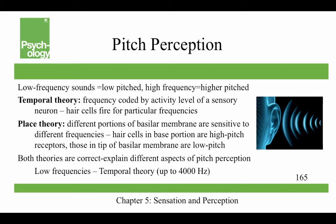For pitch perception, low-frequency sounds are low-pitched and high-frequency sounds are higher-pitched. The temporal theory states that frequency is coded by the activity level of a sensory neuron — hair cells fire only for particular frequencies — but it can't explain the whole range of hearing. Place theory holds that different portions of the basilar membrane are sensitive to different frequencies: hair cells in the base portion are high-pitched receptors and those in the tip are low-pitched. Both theories are correct but explain different aspects: low frequencies up to 4,000 hertz are explained by the temporal theory, while higher frequencies can only be encoded using place theory.